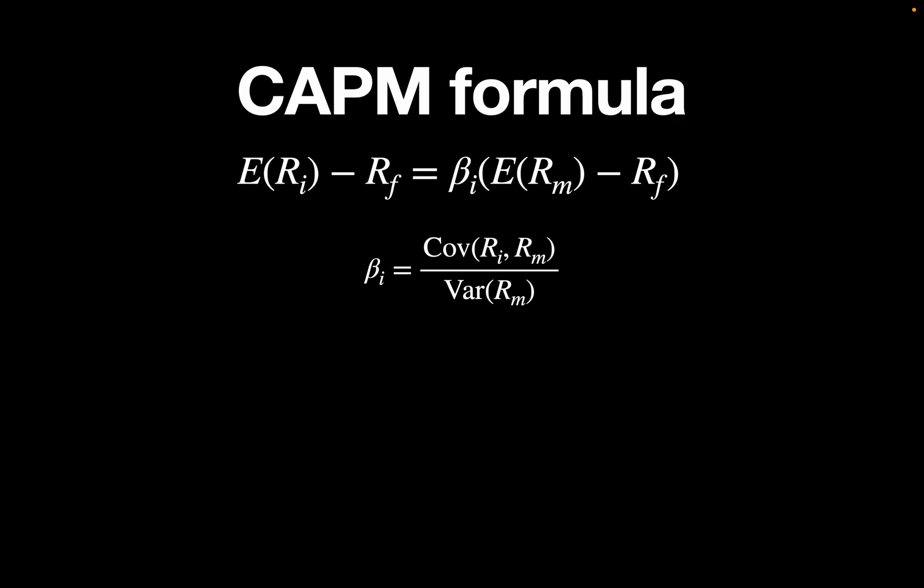In the CAPM world, the alpha would be an additional summand which always would need to be 0 so that the CAPM formula holds. Or simply put, there is no alpha in the CAPM world. So we will need to find a way to prove that there actually is an alpha in the real world.